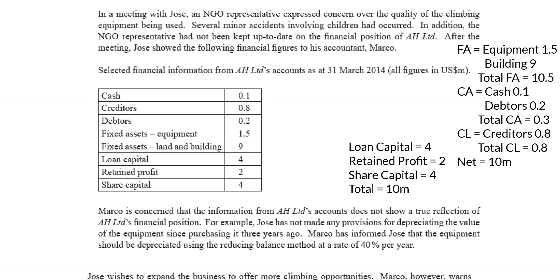The exam question doesn't ask for this, but I'll show their current liquidity via the current ratio. I can't do the acid test ratio because stock level information isn't provided, but I can calculate the current ratio. Current assets divided by current liabilities gives a current ratio of 0.38. This means for every $1 of current liabilities — financial obligations they have to pay off — they only have $0.38 in assets to pay it.